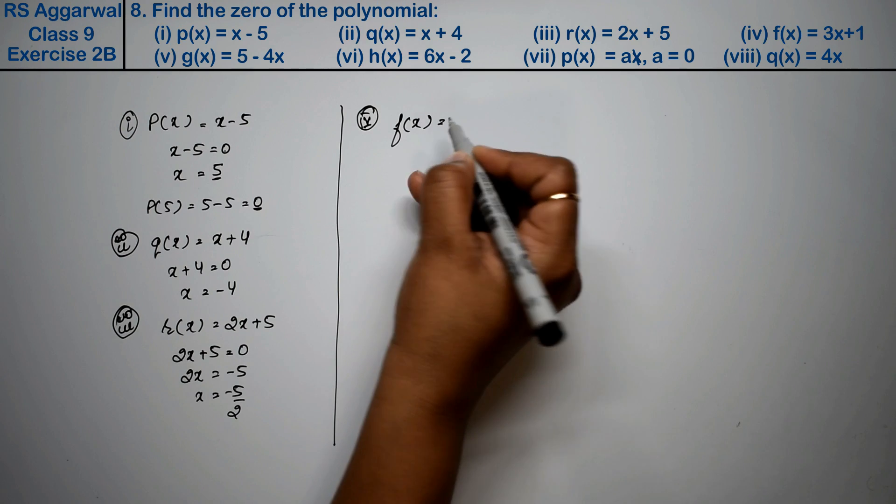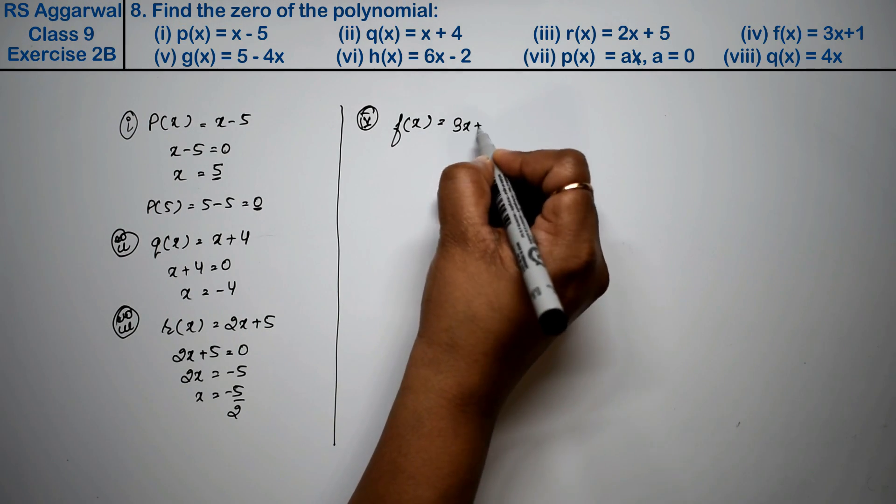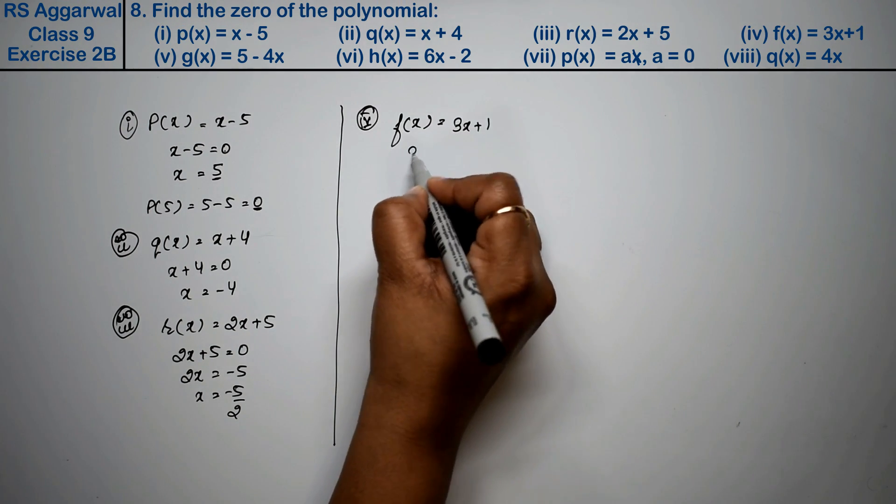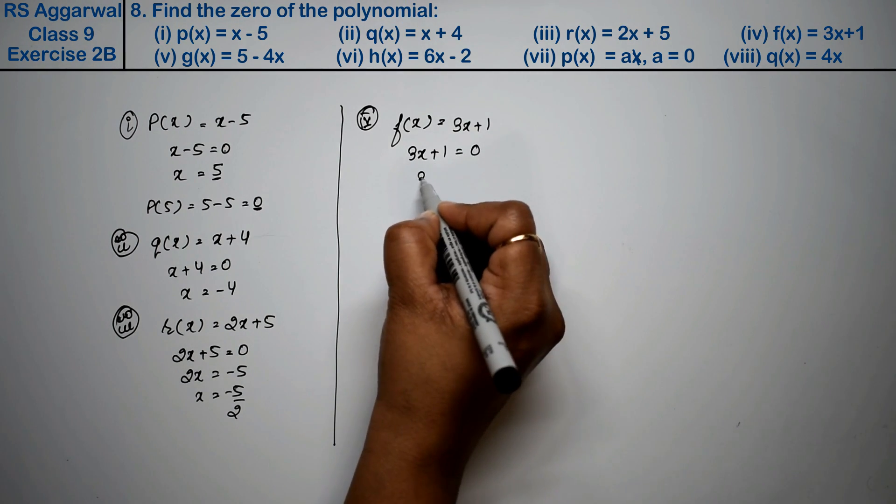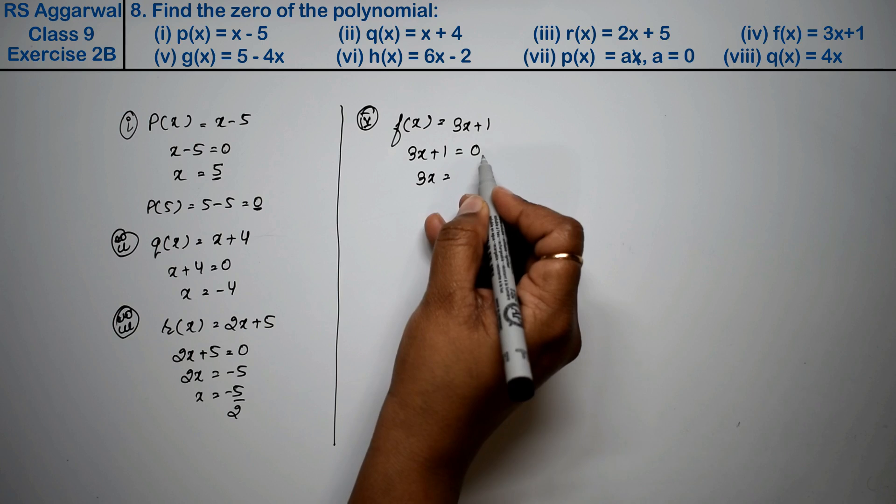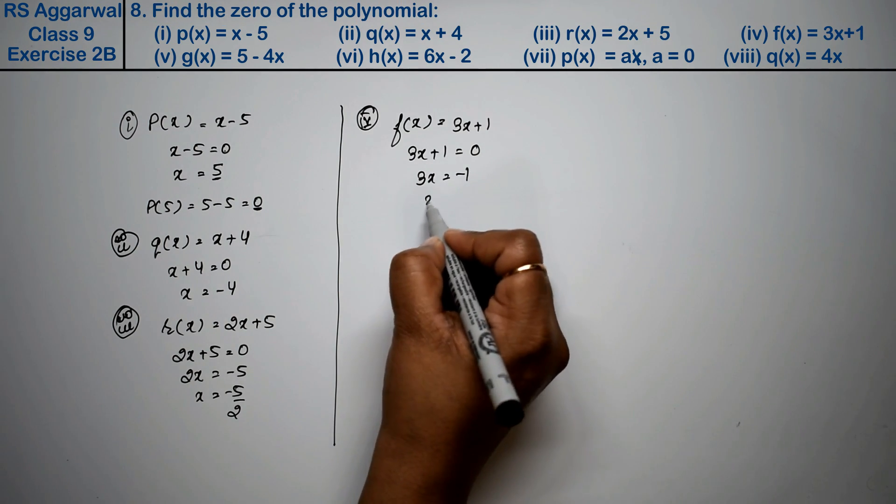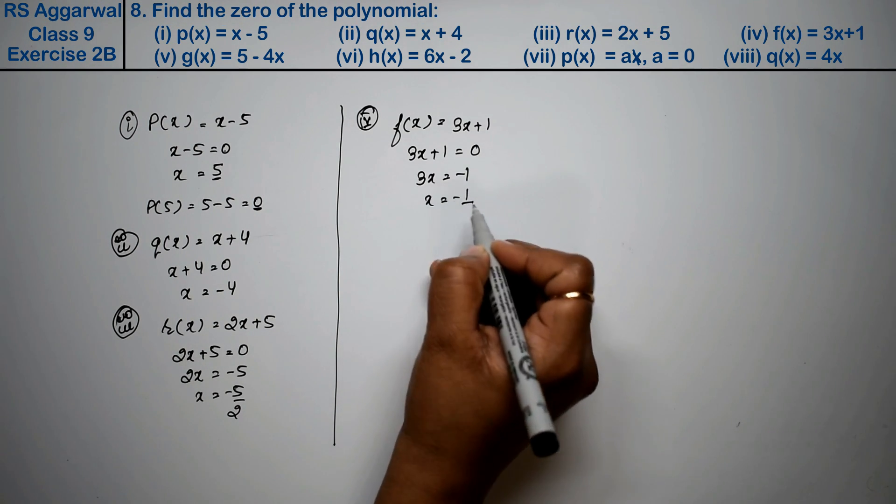Setting 3x plus 1 equal to 0, we get 3x equals what? The plus becomes minus on the other side. The value of x is minus 1. This goes upon - it was in multiplication with 3x. Fifth part is f(x) equals 5 minus 4x.